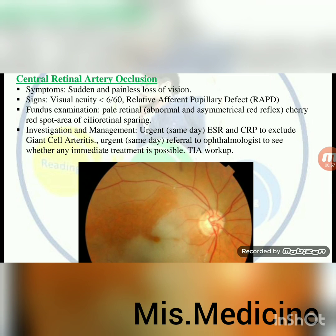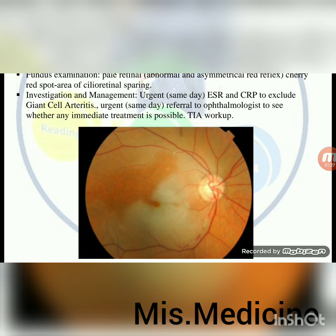Central retinal artery occlusion — symptoms: sudden and painless loss of vision. Signs: visual acuity 6/60, relative afferent pupillary defect (RAPD). Fundus examination: pale retina, abnormal and asymmetrical red reflex, cherry red spot, area of ciliary retinal sparing. Investigation and management: urgent same-day ESR and CRP to exclude giant cell arteritis; urgent same-day referral to ophthalmologist. Any immediate treatment should be considered. TIA workup required.